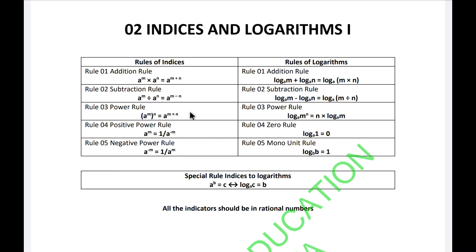Some of these equations are not mentioned in your textbook, but I will explain them in detail. For indices, there are five main rules: the addition rule, subtraction rule, power rule, positive power rule, and negative power rule. For logarithms, the rules are slightly different: addition rule, subtraction rule, power rule, zero rule, and the mono unit rule. There is also a special conversion rule between indices and logarithms.